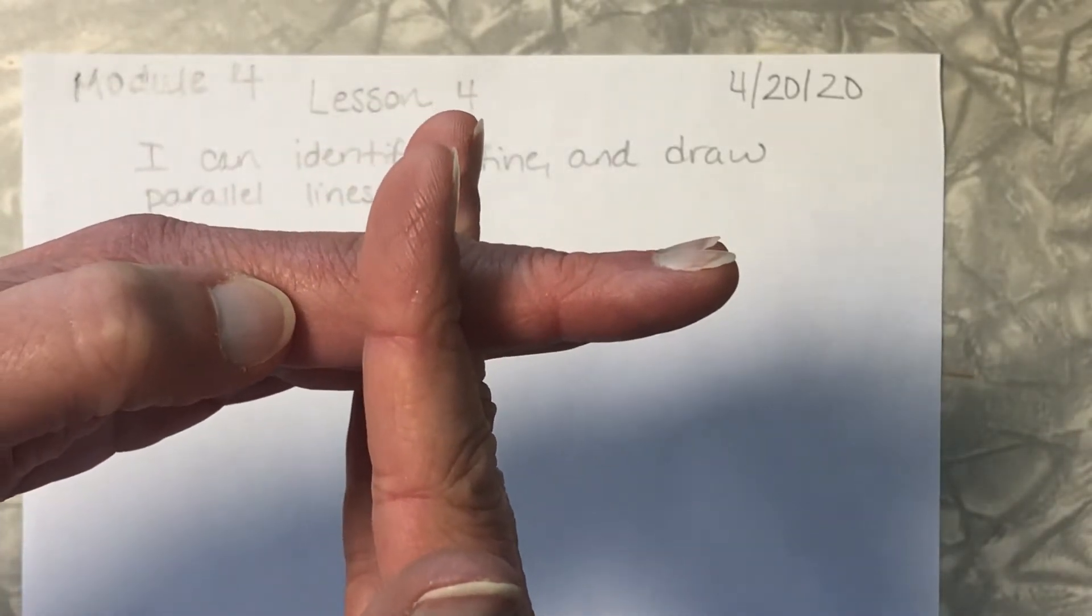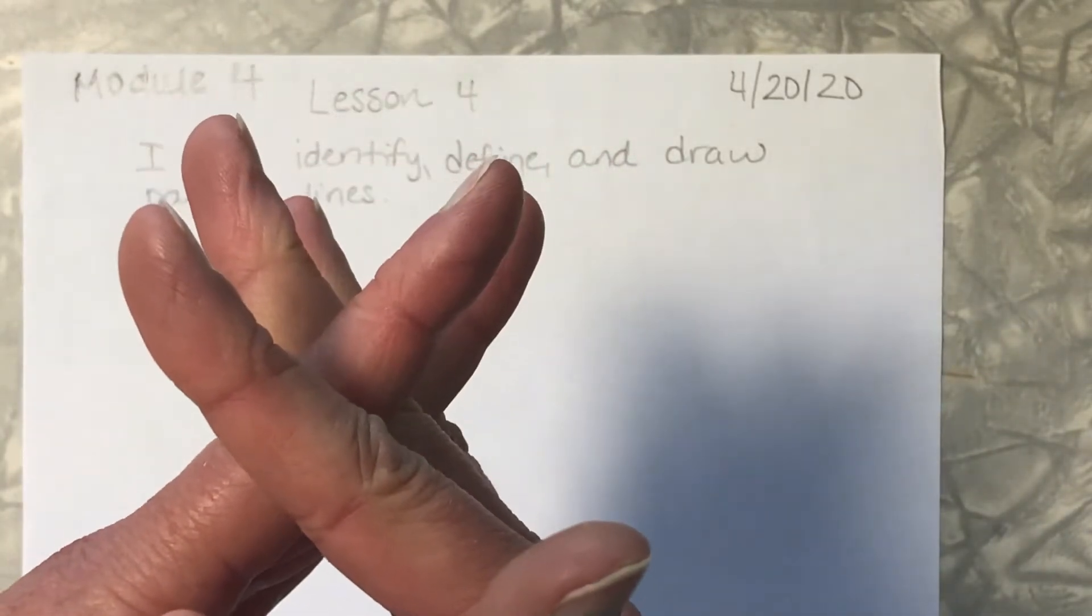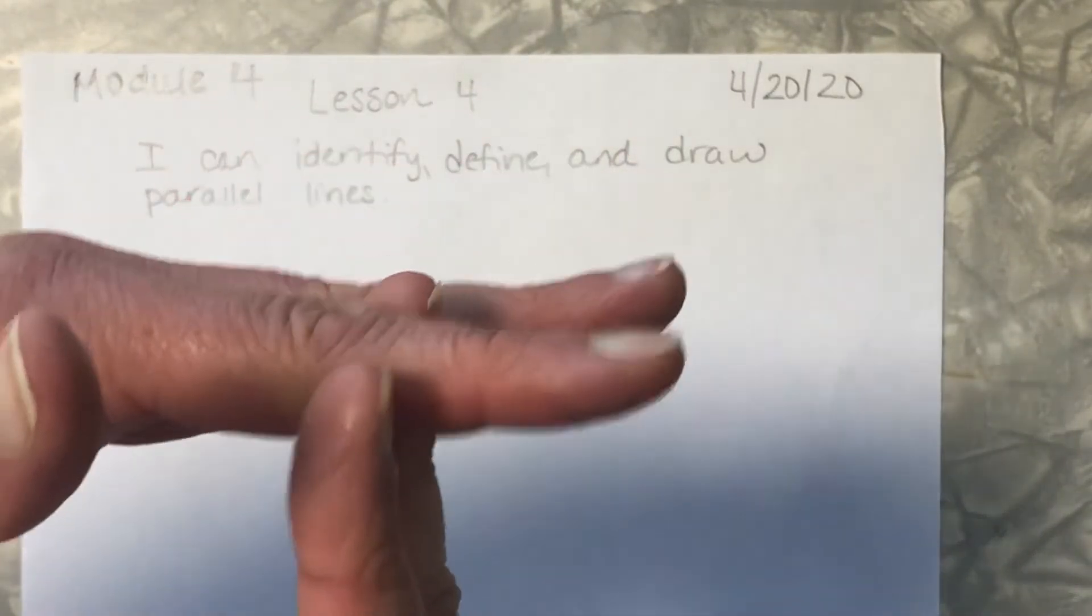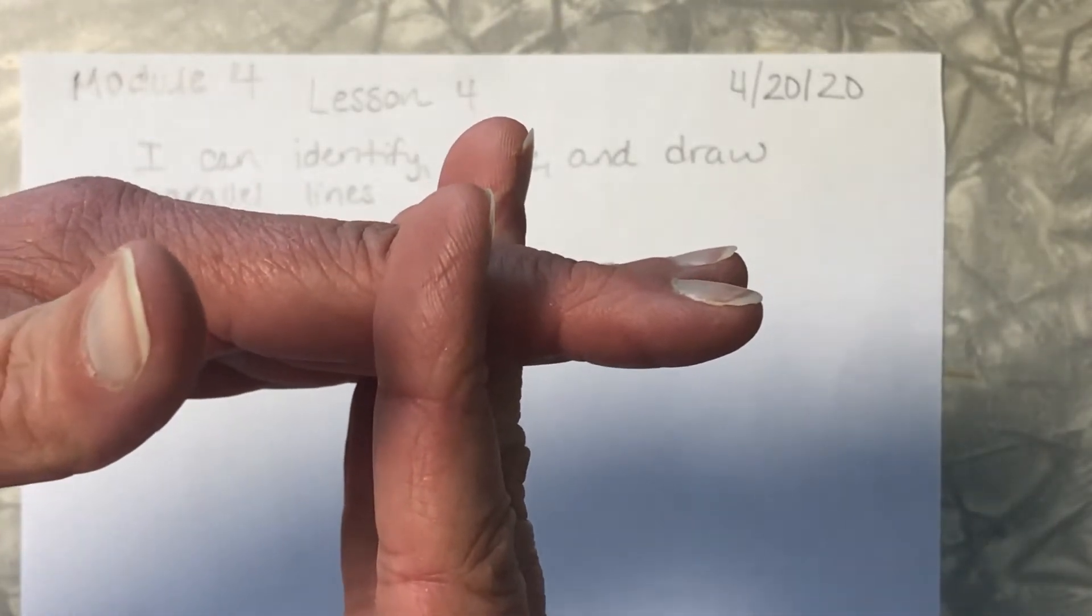So you can do that with me with your hands if you want to. Let's make intersecting lines and then let's make those intersecting lines perpendicular lines because they have right angles.